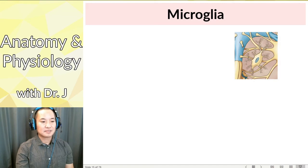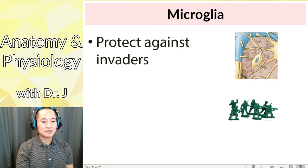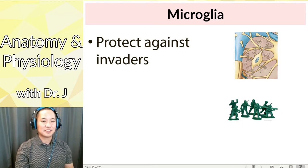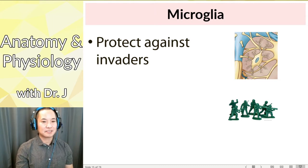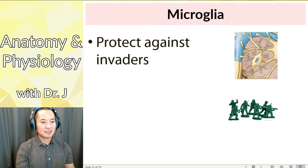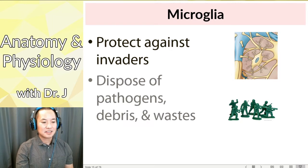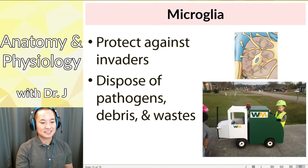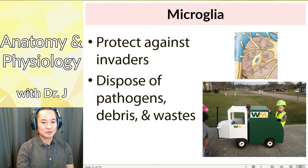Microglia — micro meaning small, glia meaning glue, so 'small glue.' I like to think of them as little soldiers protecting against invaders. If an errant bacteria, virus, or pathogen somehow gets past the blood-brain barrier and into your nervous tissue, microglia are very important in defending against those invaders. They also dispose of pathogens, debris, and waste, so they're like little soldiers and little garbage collectors inside your central nervous system.